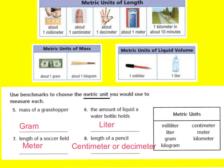Let's see what you answered. For number five, to measure the mass of a grasshopper in metric units, we would use grams because a grasshopper is very light. For number six, the amount of liquid a water bottle holds — we would use a liter. For number seven, the length of a soccer field — we would use meters. And to measure the length of a pencil, you could use either centimeters or decimeters.